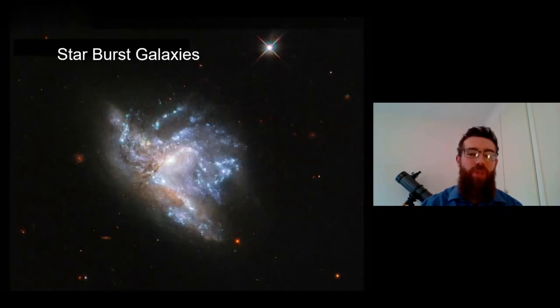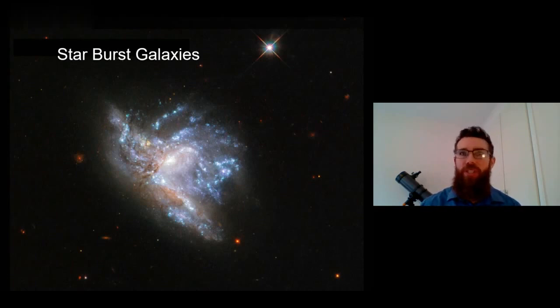So, one of the consequences of these galaxies actually colliding is that they have massive increases in star formation. So these spiral galaxies, when they collide, they've still got a lot of gas in them. But when they collide, that gas gets compressed, it collapses into new stars. So they can be classified as a starburst galaxy.